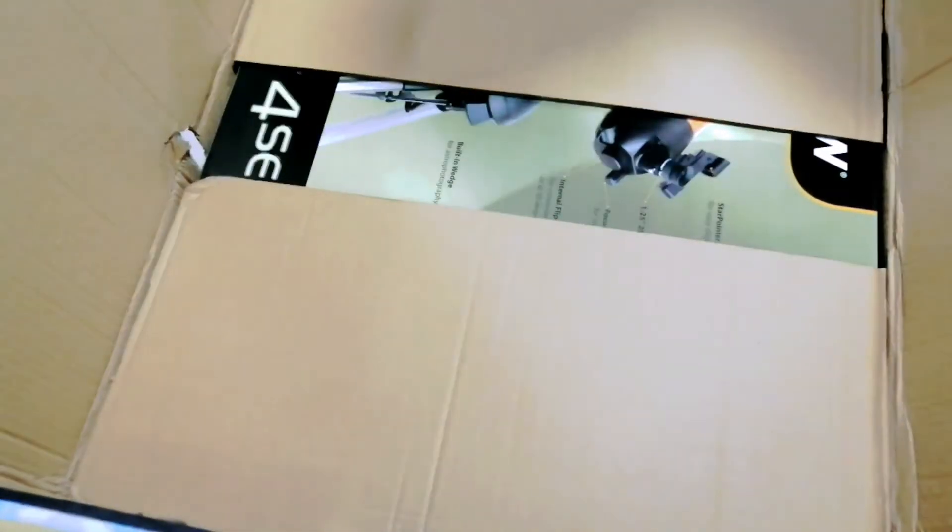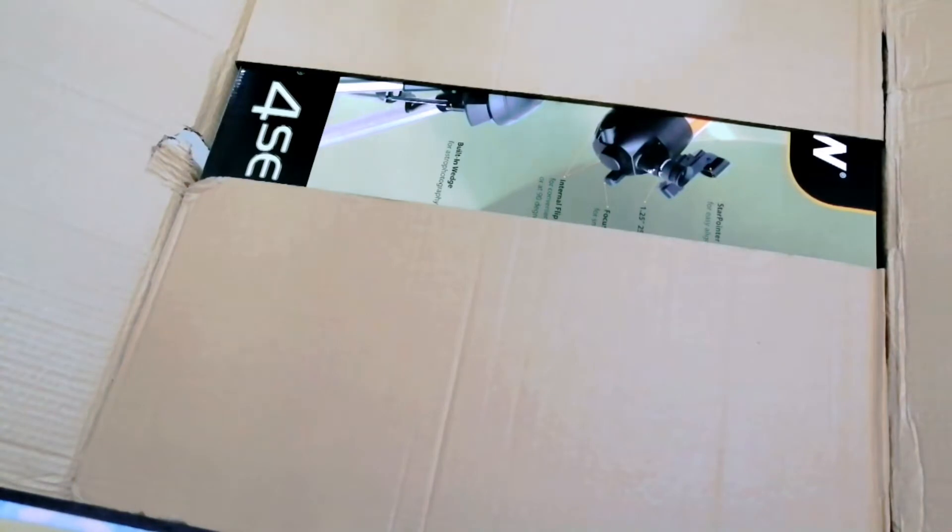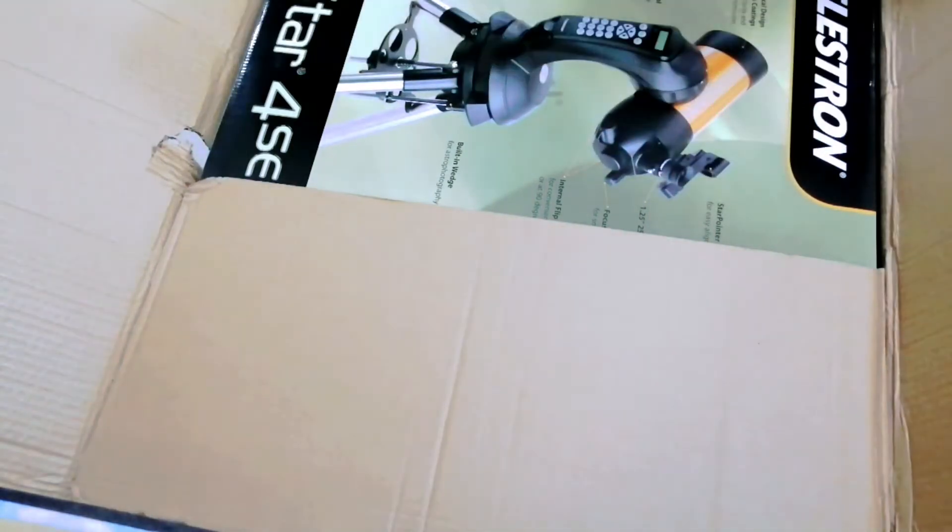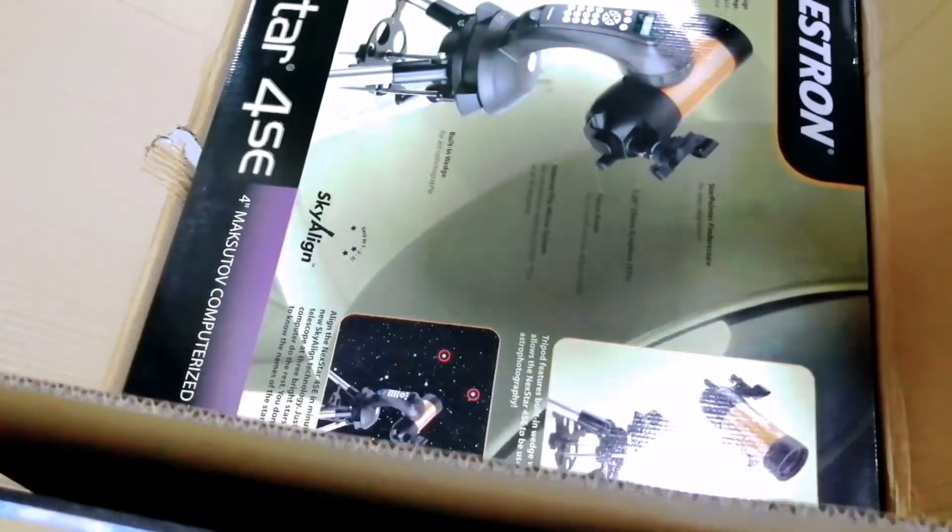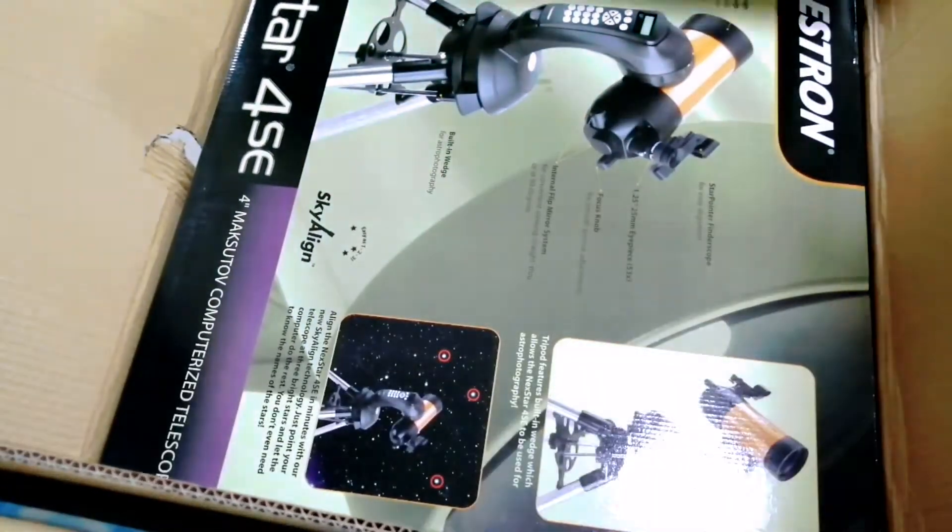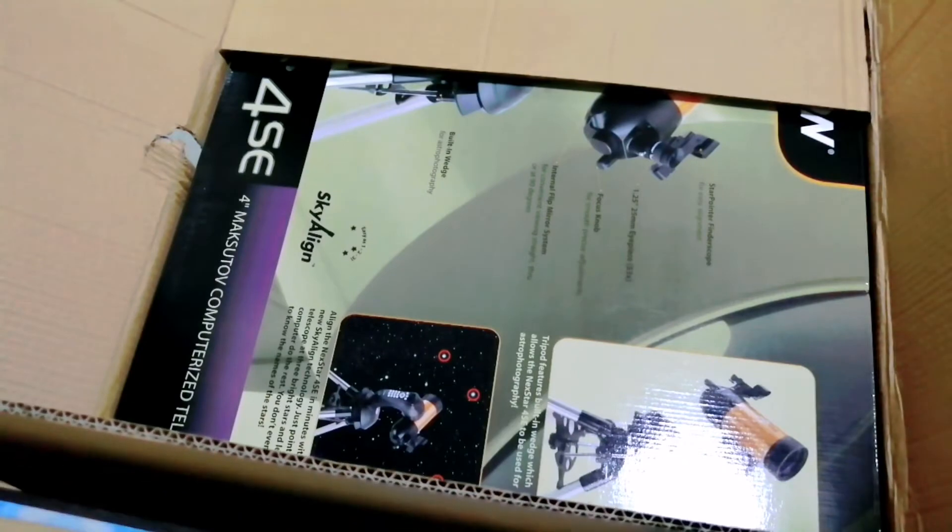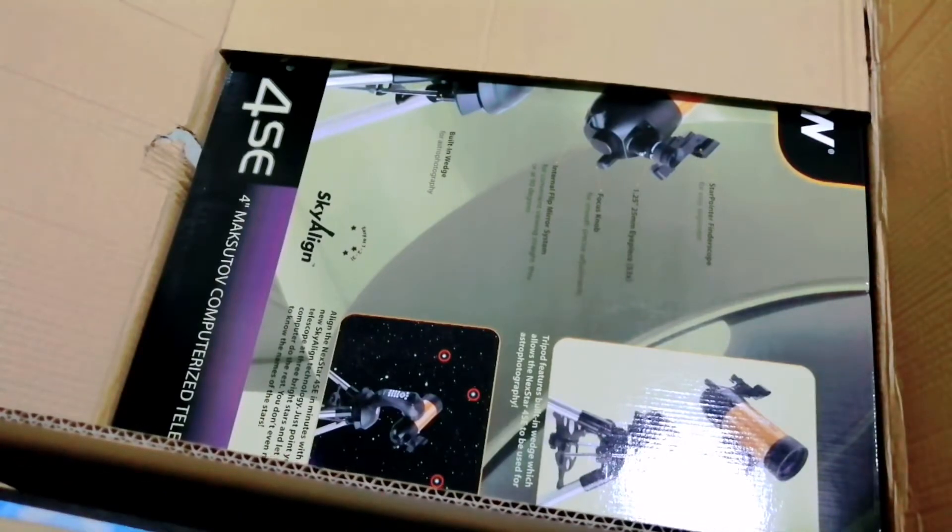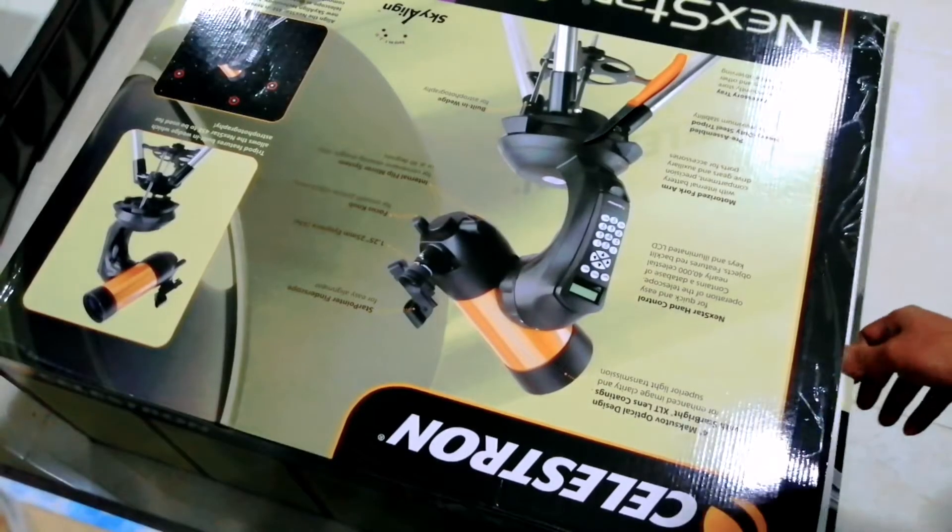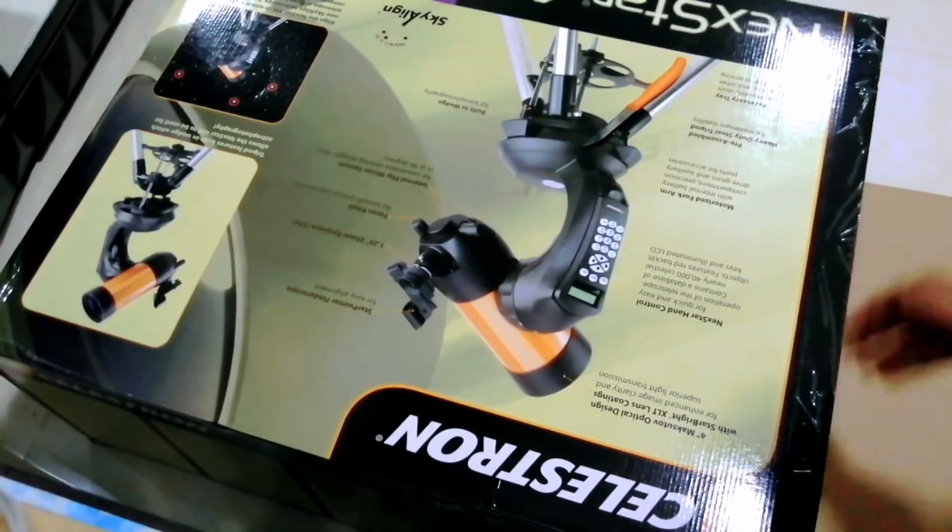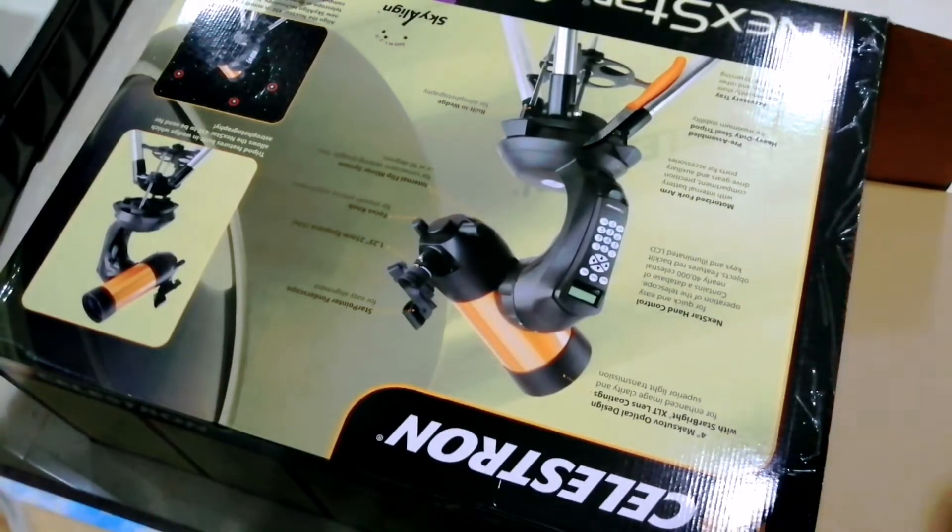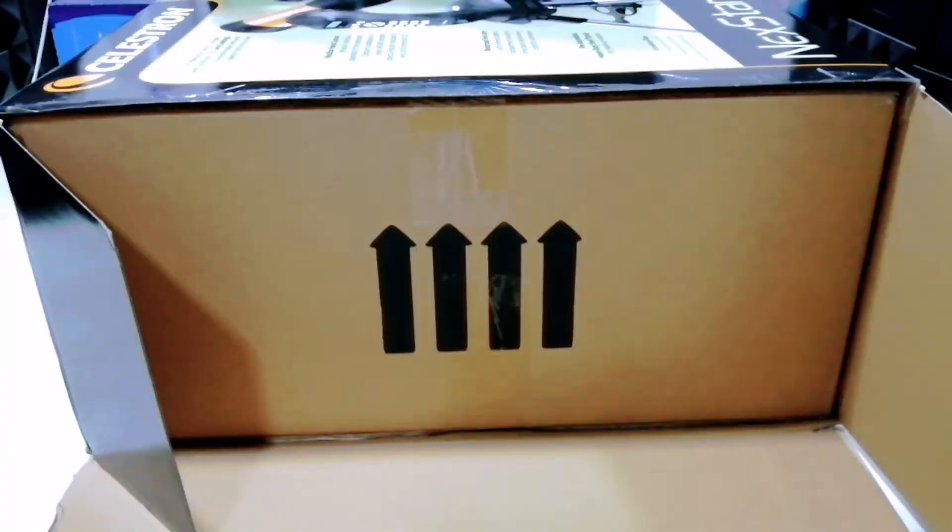Celestron has equipped the 4SE with its SkyAlign system for pointing and tracking the 40,000 objects in its database. Frankly, a good many of those objects are beyond the practical range of this telescope except under absolutely perfect conditions. And do the math, you'd have to observe more than 10 objects every night of the year for more than 10 years in order to see each one only once.